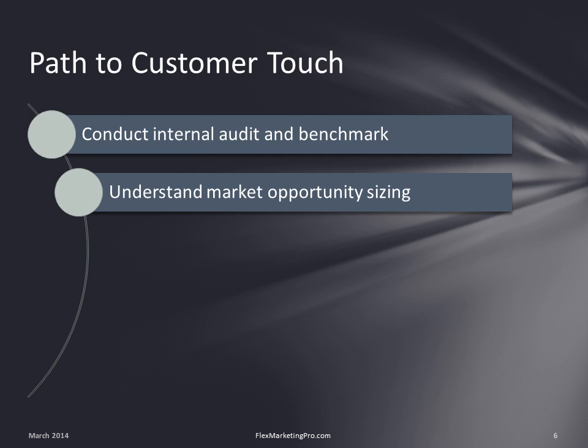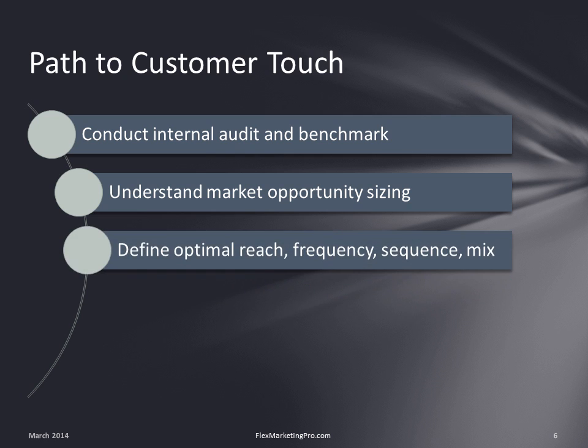Now we're ready to define our customer touch plan — Step 3. Here we are building a model to forecast the performance of our demand generation programs based on reaching frequency within the purchasing cycle, marketing mix, the deliberate sequencing of marketing impacts, and the expenditure levels against each. I'll share a sample planning matrix on the next slide.